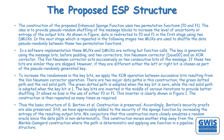The construction of the proposed Enhanced Sponge Function uses two permutation functions F0 and F1. The idea is to provide pseudo-random shuffling of the message blocks to increase the level of uncertainty or entropy of the output bits. As shown in the figure, data is redirected to F0 and F1 in the first stage using two DMUXes. In the next stage, which is repeated in the following stages, two MUXes are used to shuffle the data pseudo-randomly between these two permutation functions.